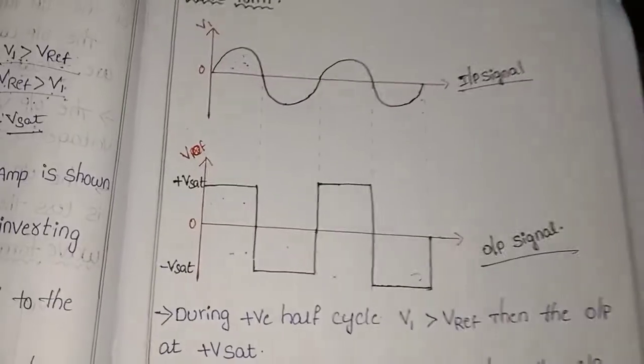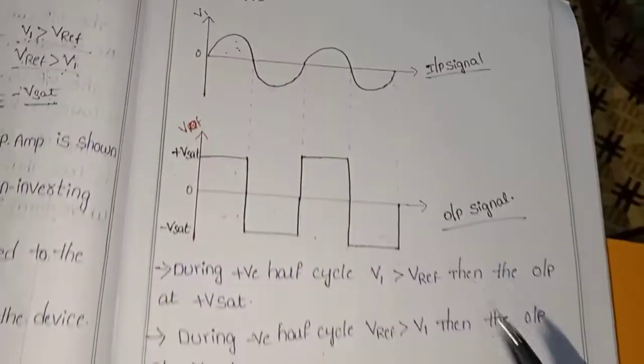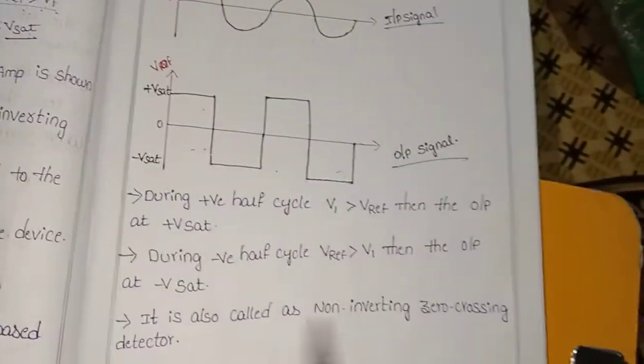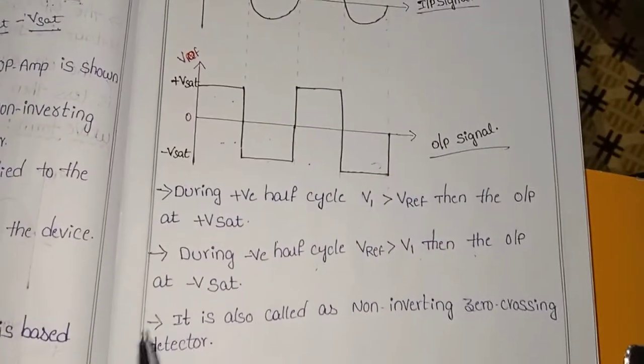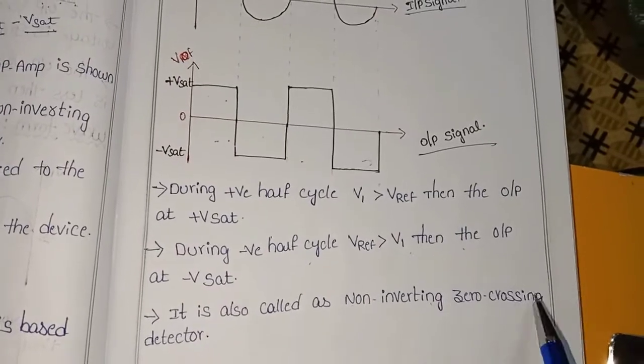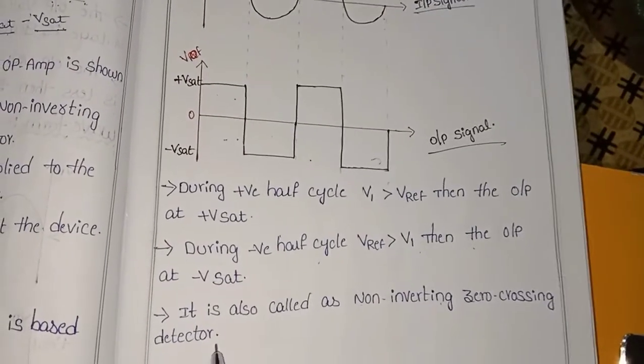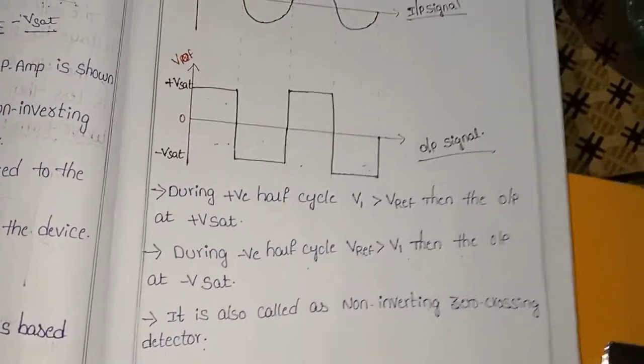This is the non-inverting zero crossing detector. This circuit is also called a non-inverting zero crossing detector.